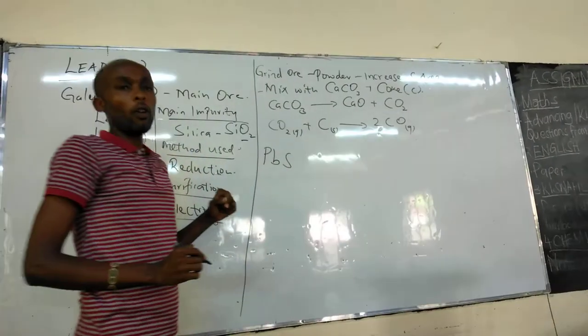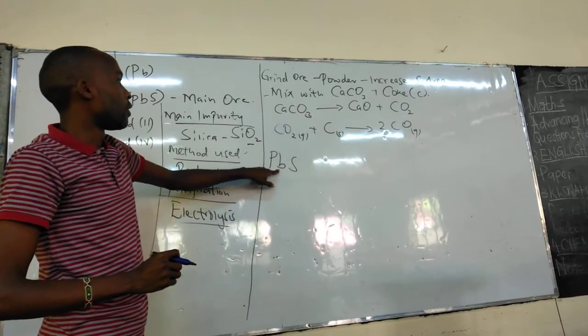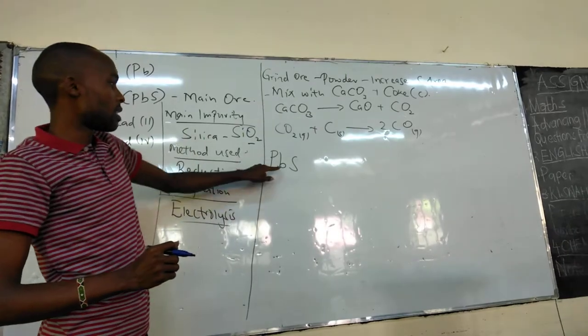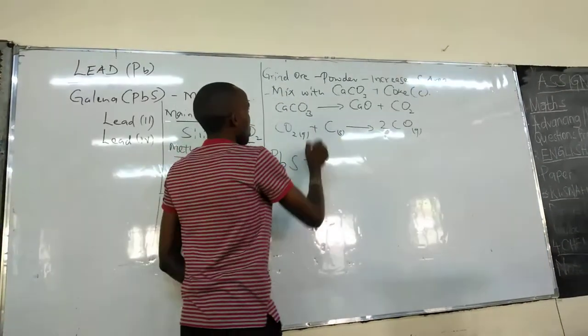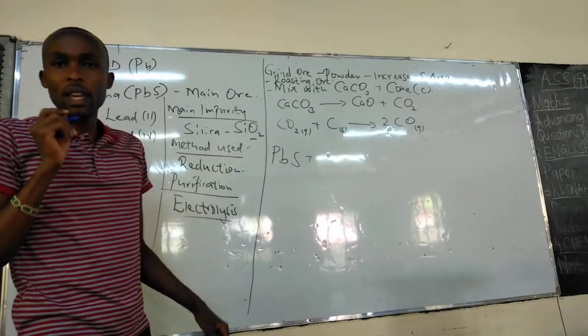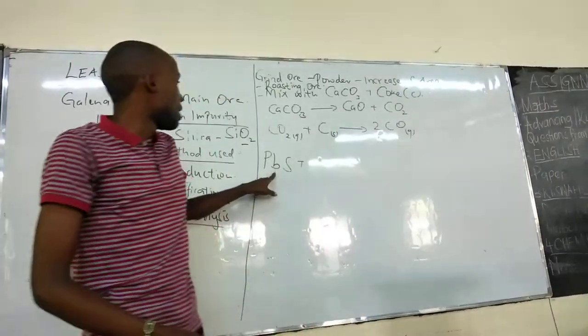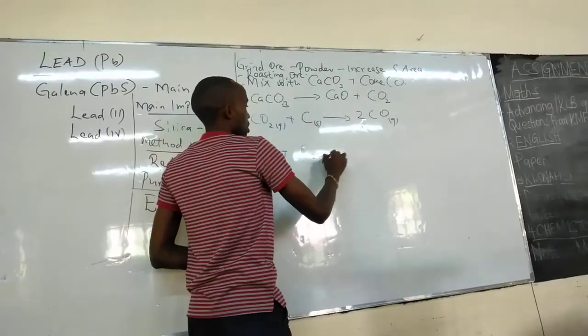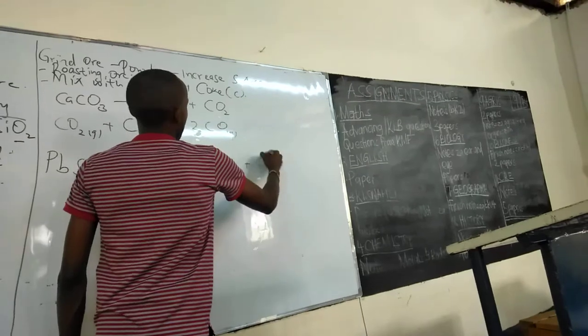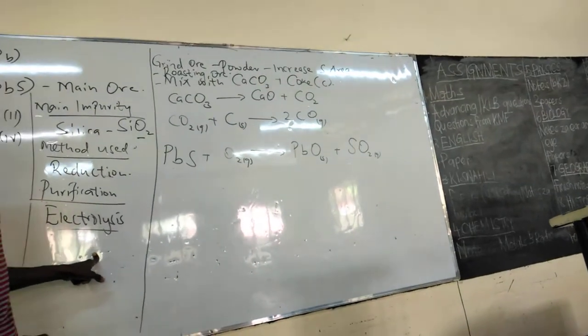First of all, before we go to reduction, the first thing that happens before you even mix the ore with calcium carbonate and coke, is roasting the ore. Lead sulfide is heated in supply of oxygen, particularly in air. So, lead sulfide plus oxygen, you get lead oxide and sulfur dioxide.